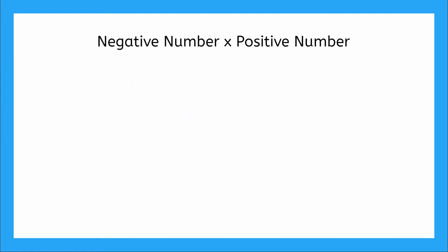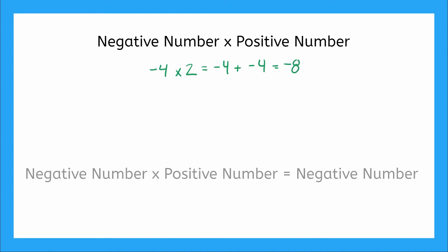So let's keep this idea in mind as we move to negative numbers. What if I have a negative number times a positive number? Say this time we have negative four times two. It's saying add negative four, two times. So I add negative four two times, and what do we get? We get negative eight. This gives us a rule that a negative number times a positive number equals a negative number.